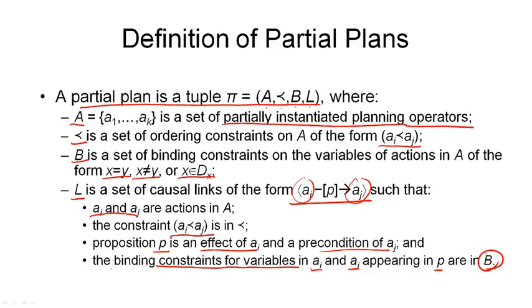So, in short, remember this. A partial plan is a four-tuple consisting of actions, ordering constraints, variable bindings, and causal links, where a causal link connects a producer to a consumer via a protected proposition P. So, that's what a partial plan looks like. And the search nodes in our search space will be partial plans.